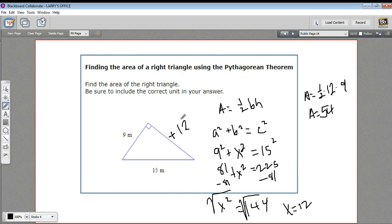And then we just need to get our units right. This is area, and the original measures were in meters, so this is going to be square meters. So that is how to find the area of a right triangle using the Pythagorean theorem.